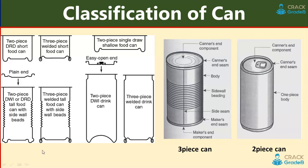An important term in canning is lacquering of cans. The contents of the can can react with the walls of the container, causing discoloration of the product or corrosion of the can. It is necessary to coat the interior with lacquer to prevent discoloration and avoid imparting flavor. There are two types of lacquer: acid-resistant and sulphur-resistant. Internal coating eliminates food-metal interaction, while external coating protects the can from abrasion and corrosion.